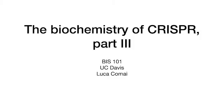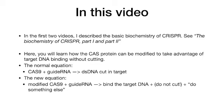This is Luca Comai for BIS101 with the third part of CRISPR biochemistry. In the first and second videos I described the basic biochemistry of CRISPR — see parts 1 and 2. Here you will learn how the Cas protein, in this case Cas9, can be modified to take advantage of target DNA binding without cutting.